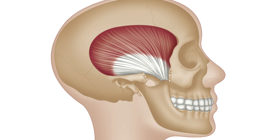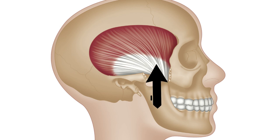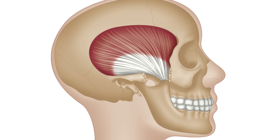It then inserts into the coronoid process — that's part of the lower jaw, the mandible. The muscle therefore, when it contracts, will pull upwards and close the jaw. We've talked about the problems that would set pain off and set triggers off in the muscle.